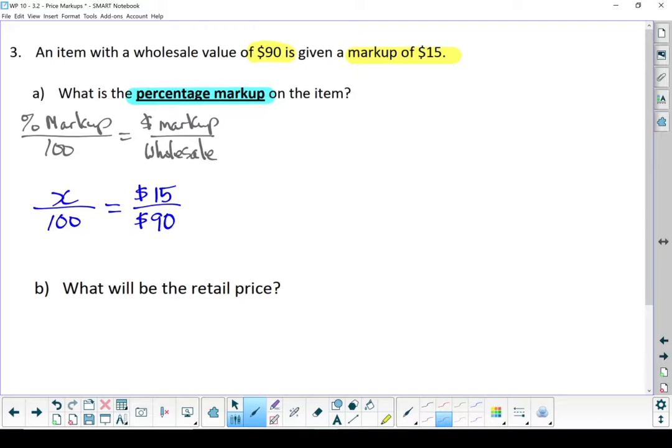And now let's cross multiply. X times 90 gives me 90X, and 100 times 15. 90X equals 1,500. Divide both sides by 90.